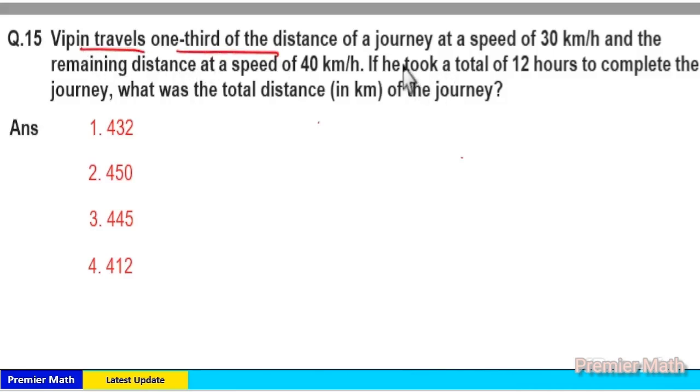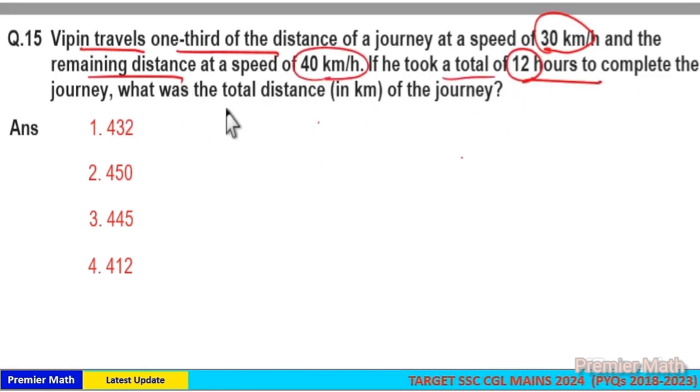Vipin travels one-third of the distance of a journey at a speed of 30 km per hour and the remaining distance at a speed of 40 km per hour. If he took a total of 12 hours to complete the journey, what was the total distance of the journey?